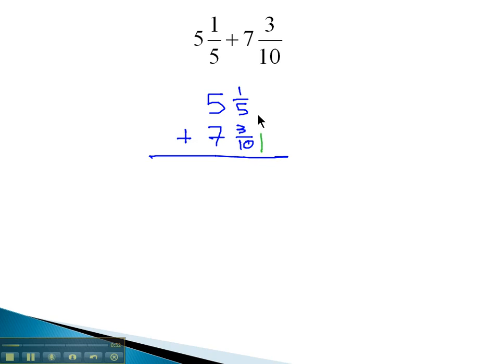We will start by working on the right side or adding these fractions together. To add fractions, we remember we need a common denominator. The common denominator between 5 and 10 is 10.